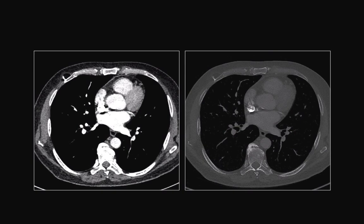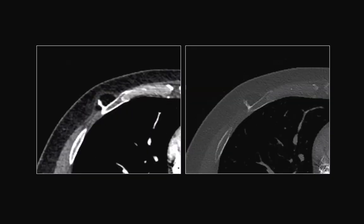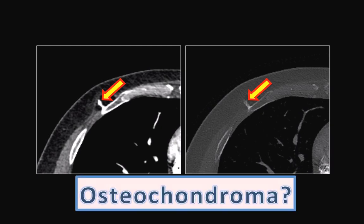You probably noticed that there is an abnormality in the right anterior chest wall. Let's magnify this image. There is a bony spur that arises from the anterior right rib, which makes you think about an osteochondroma.